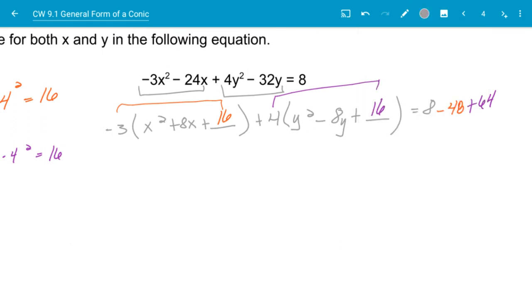So now I can go through and I can rewrite my equation to be negative 3x squared plus 8x plus 16 plus 4 times y squared minus 8y plus 16 is equal to, I have 8 minus 48 plus 64, and I add all those together and I get 24.